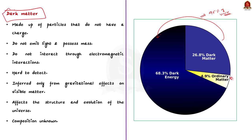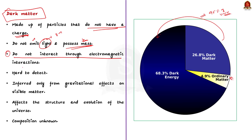Dark matter is made up of particles that do not have charge. We call these particles dark because they do not emit light, which is an electromagnetic phenomenon, and they are called matter because they possess mass just like normal matter and they interact through gravity. Even though they interact with gravity, since they do not have charge, they do not interact through electromagnetic interactions. This feature of dark matter makes it very hard to detect. Dark matter's existence is inferred only from the gravitational effects on visible matter. Even though dark matter affects the structure and evolution of the universe, the composition of dark matter is still unknown.